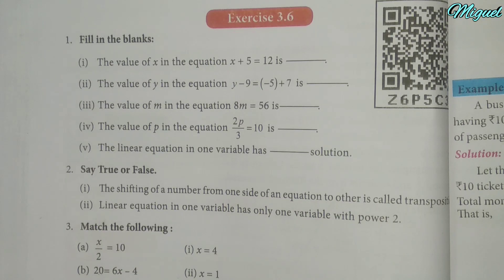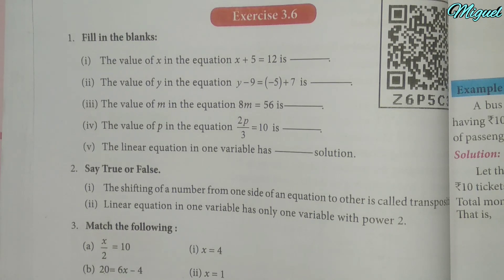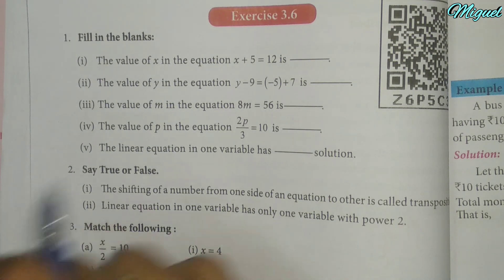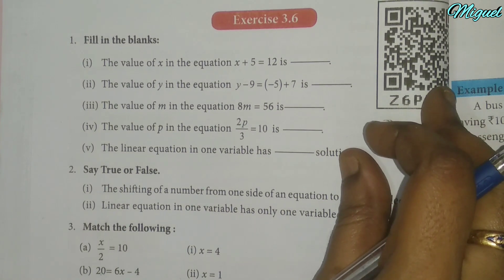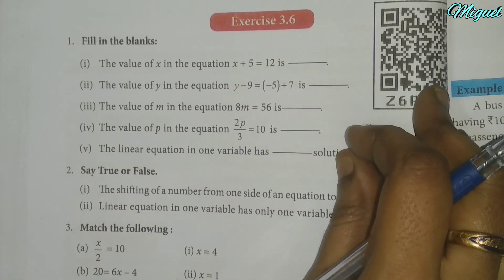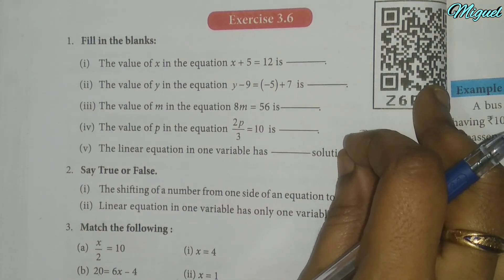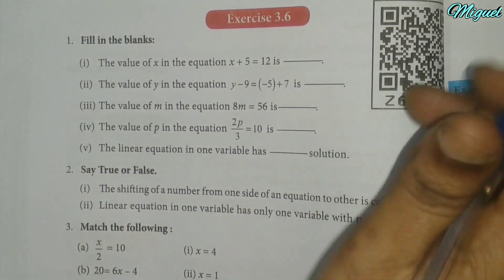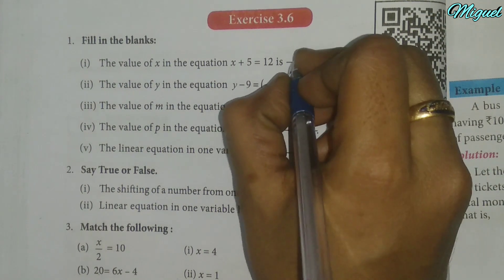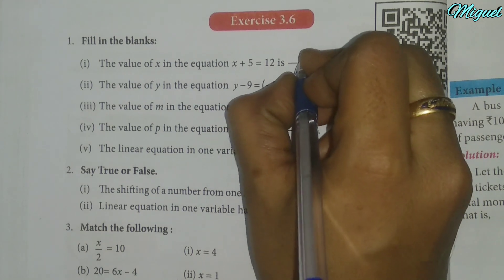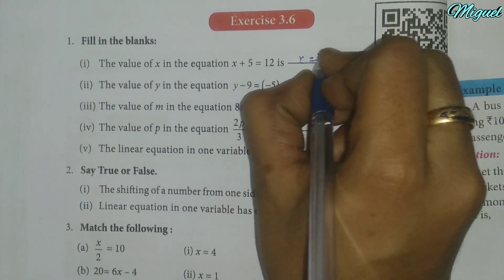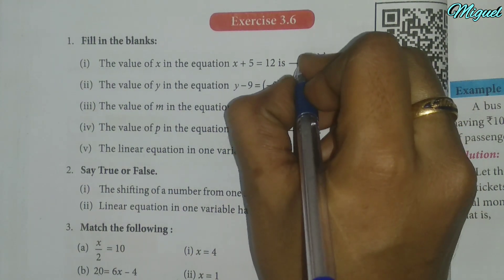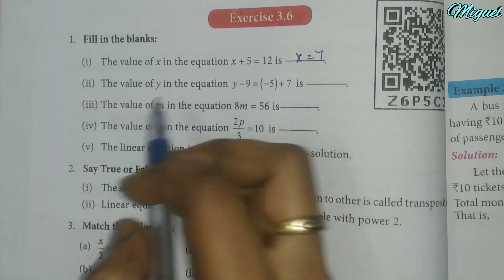I am going to talk about the 8th standard maths exercise 3.6, Fill in the blanks. The value of x in the equation x plus 5 equals 12 is x equal to 7. The value of x in the equation is 7.